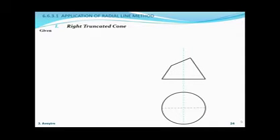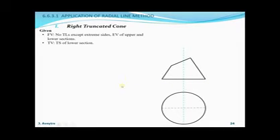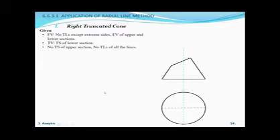Example: a right truncated cone. In the front view, there are no true lengths of the radial lines except at the extreme side edges. Edge views of the upper and lower sections are provided. From the top view, we have the true shape of the lower section, but no true shape of the upper section is given. No true lengths of all sides are given, so these are required for the development.